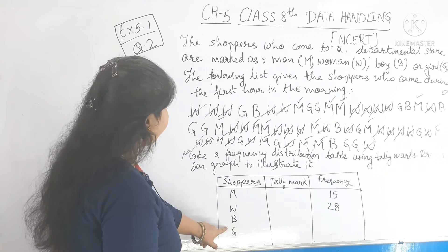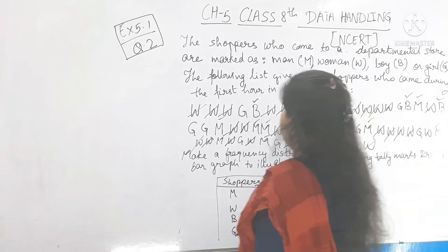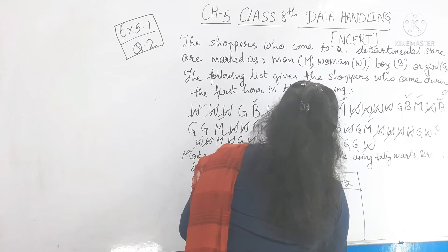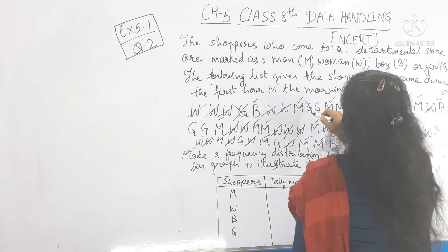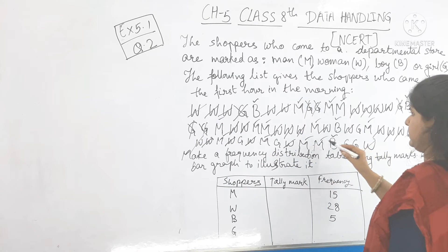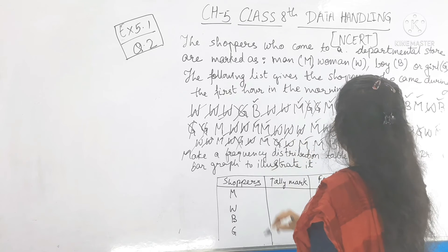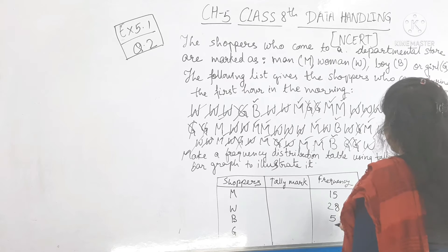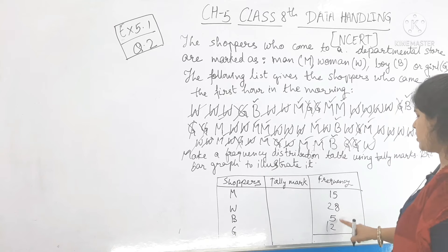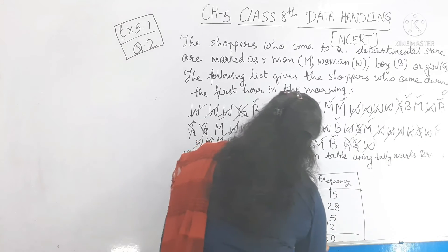Counting the boys (B) gives a frequency of 5, and counting the girls (G) gives a frequency of 12. The total frequency is 15 + 28 + 5 + 12 = 60.